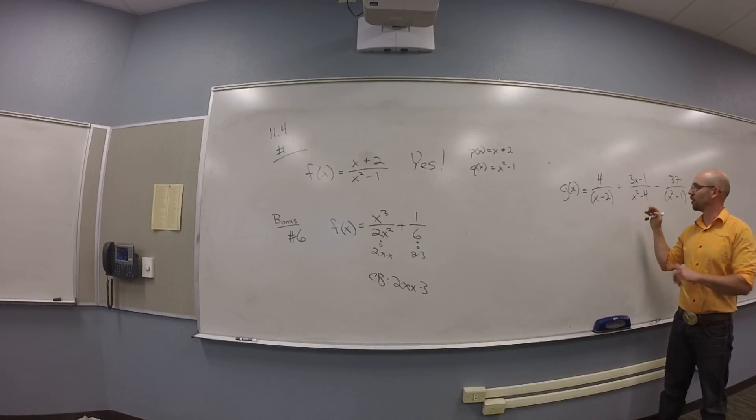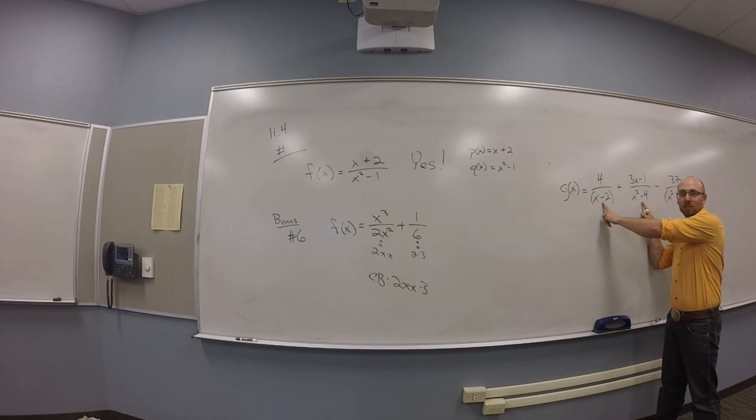If you multiply all these together, you're going to get an extra factor of X minus 2. Right. And then you won't end up with a quadratic. You'll end up with a cubic on the top. And you won't be able to solve it.